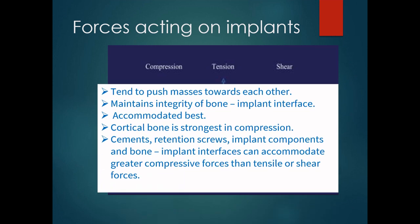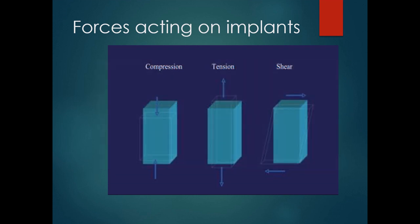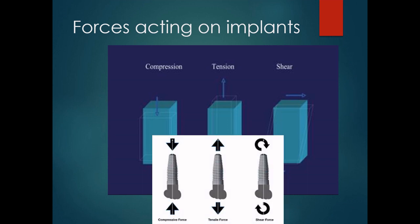Compressive forces tend to push masses toward each other and maintain the integrity of the bone-implant interface; cortical bone is strongest under compression. Cements, retention screws, implant components, and bone-implant interfaces can accommodate greater compressive forces than tensile or shear forces, so compressive forces should be the dominant type in implant prosthetic occlusion. Shear forces are most destructive — cortical bone is weakest at accommodating shear forces — so shear forces should be minimized while compressive forces should be dominant.